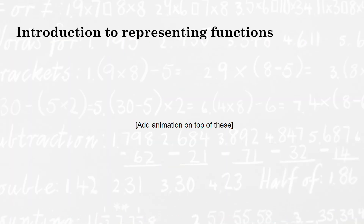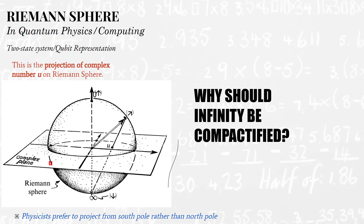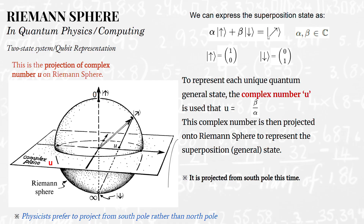Especially in quantum physics: when beta is definitely more significant than alpha, the phase doesn't really matter because it will definitely converge to the down state. That's an interesting application of the Riemann sphere. I hope you enjoyed this session and I hope to see you again. Thank you.